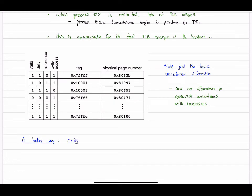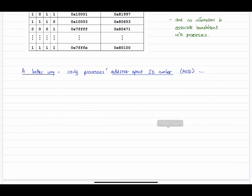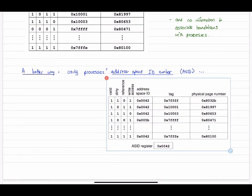Here's a better way to do it. Now we do associate translations with processes. We use something called an address space ID number. So here's how it's set up. An ASID. Let's look at an improved TLB now.